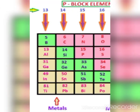In group 13, except boron, all elements have metallic nature. Why? Atomic size is very important. The effective nuclear charge is not enough to hold the outermost electrons strongly, so it is easy to remove the electron. That gives it metallic character.